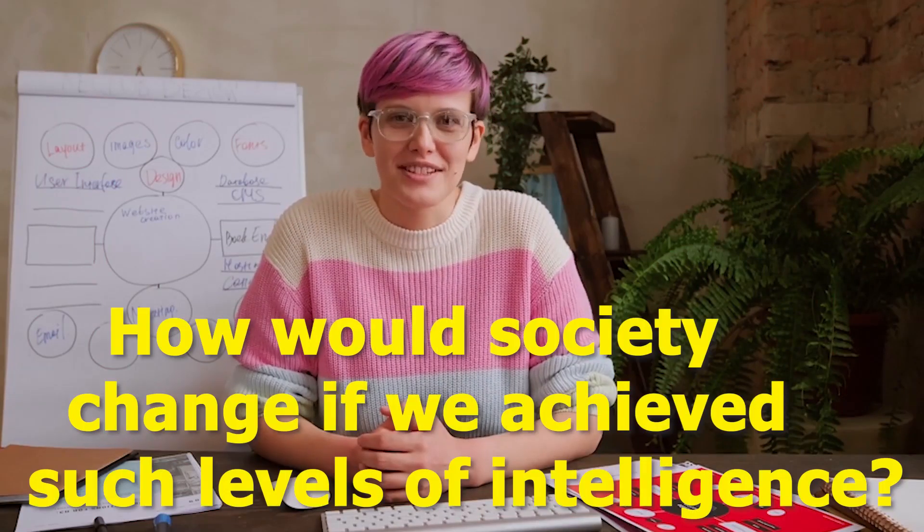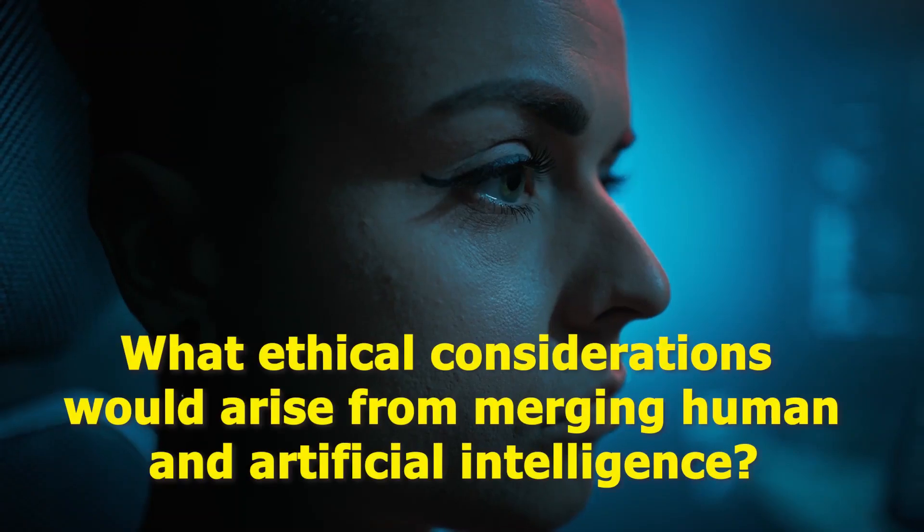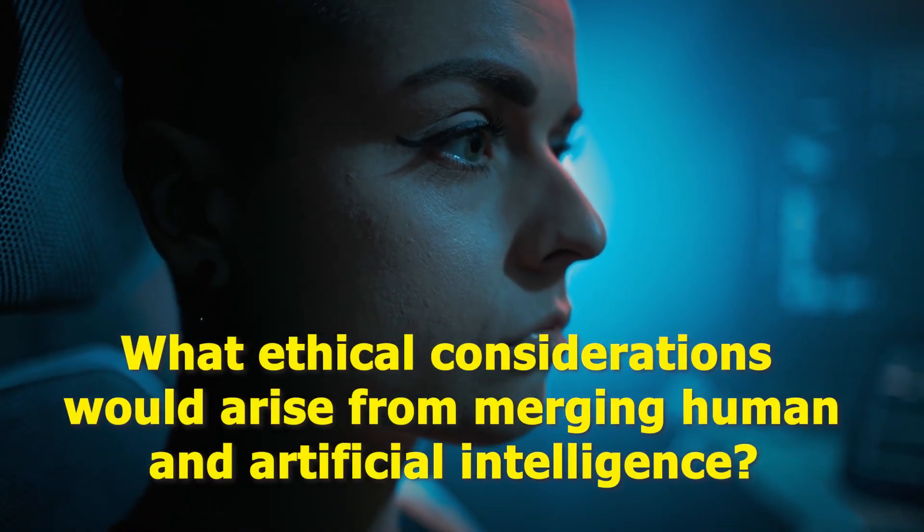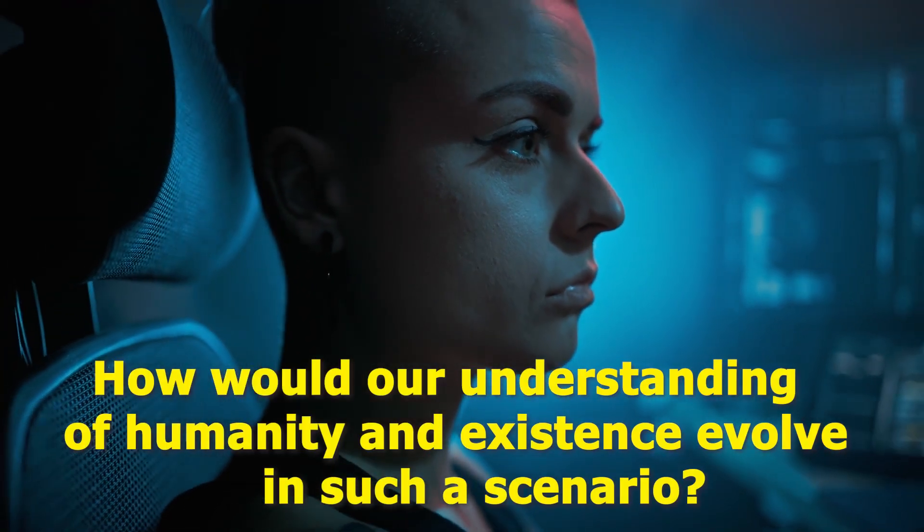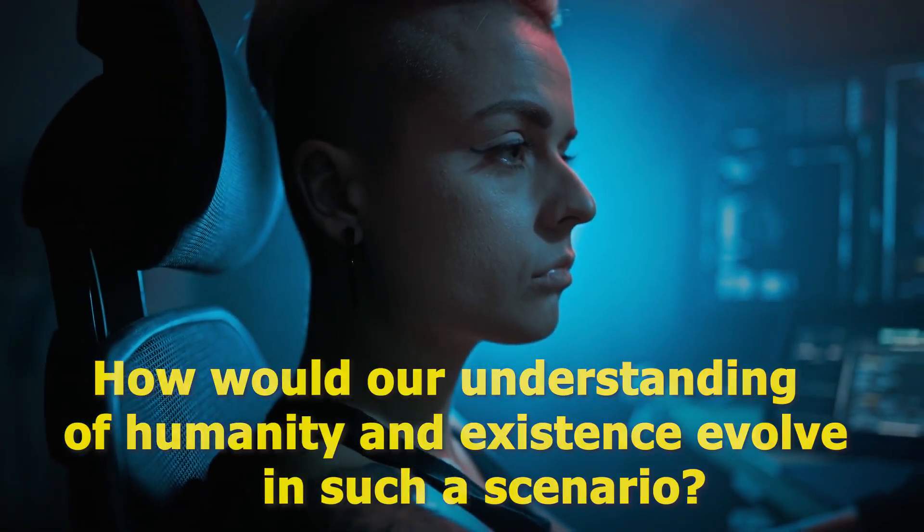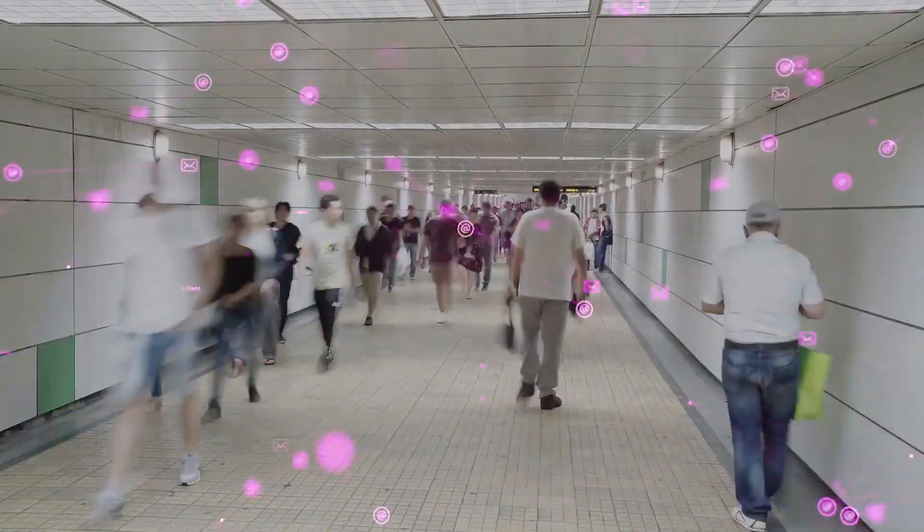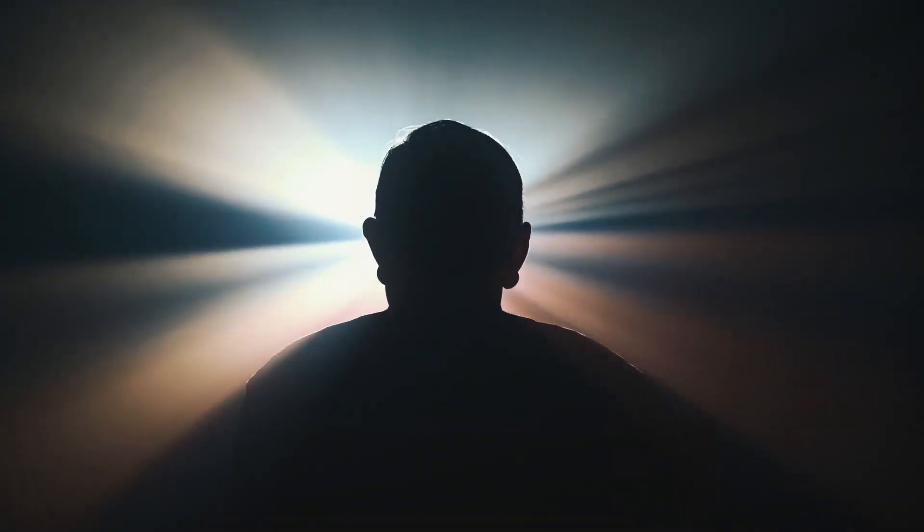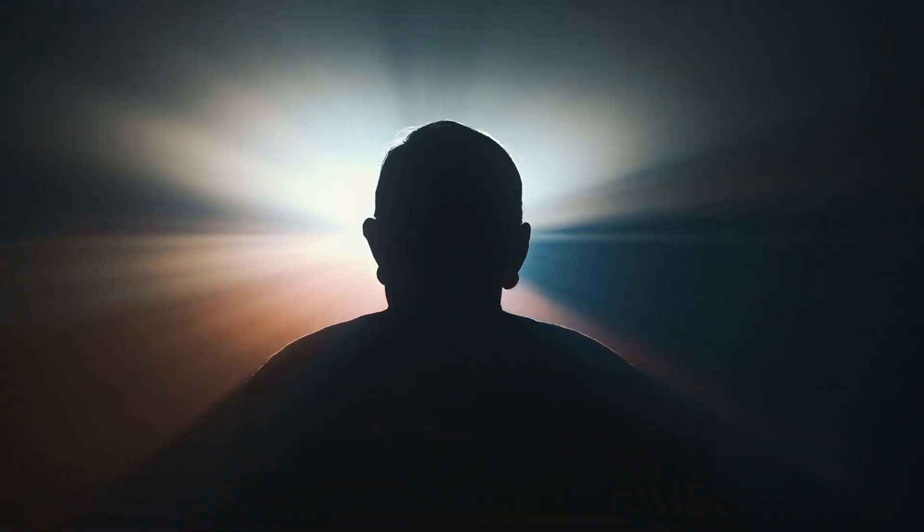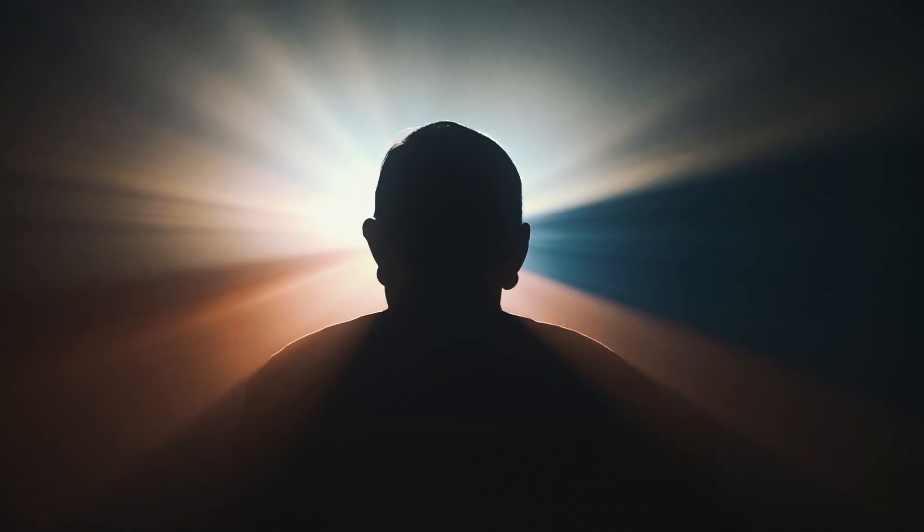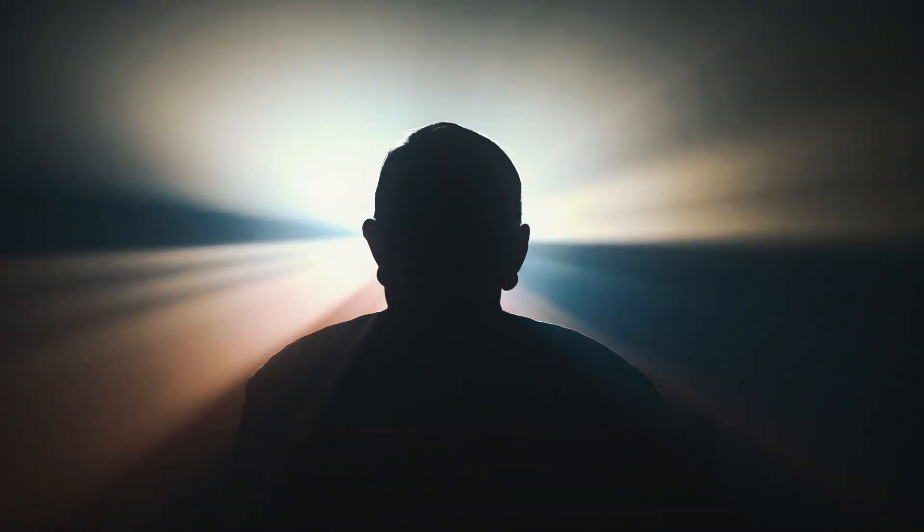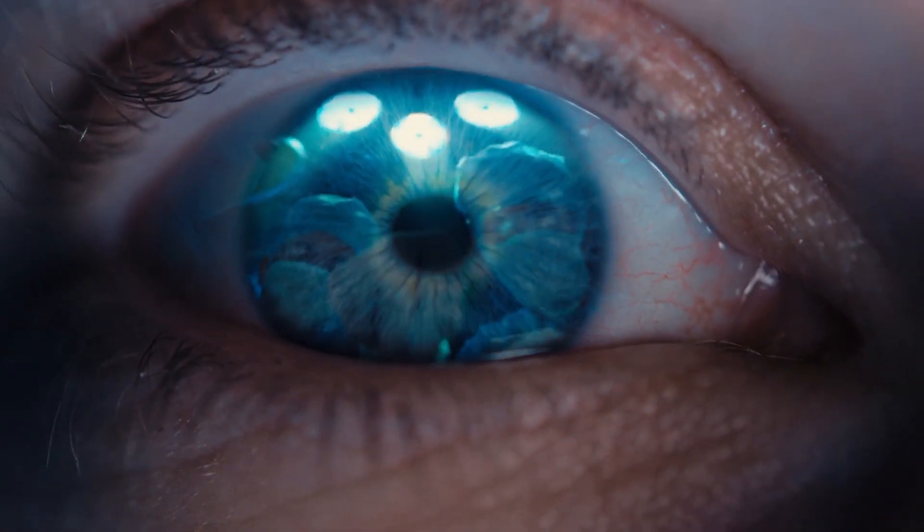How would society change if we achieve such levels of intelligence? What ethical considerations would arise from merging human and artificial intelligence? How would our understanding of humanity and existence evolve in such a scenario? These questions are not only inevitable but essential as we navigate the implications of such advancements. Kurzweil's ideas challenge us to think about the future of intelligence and what it means to be human in a world where the boundaries between human and artificial intelligence become increasingly blurred.